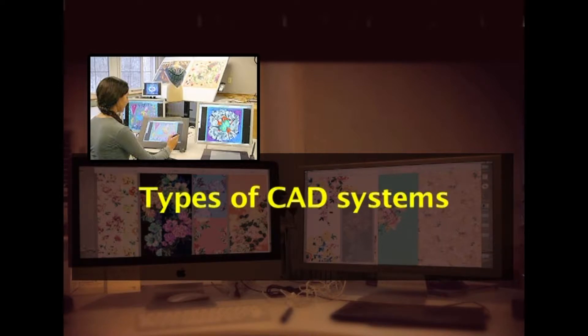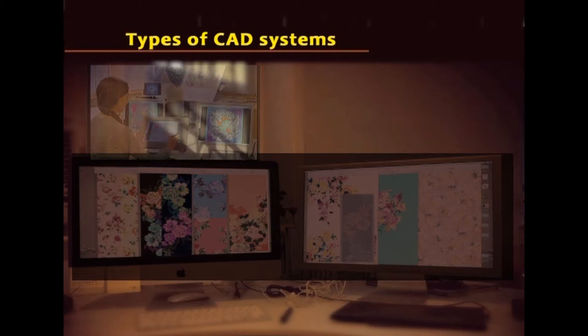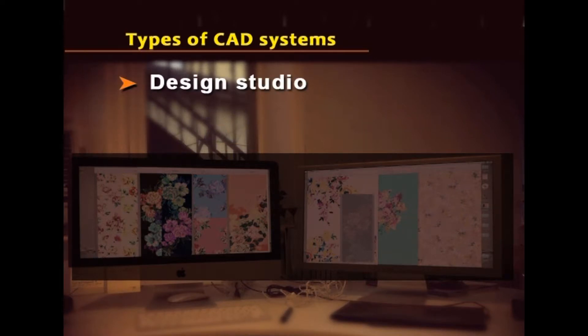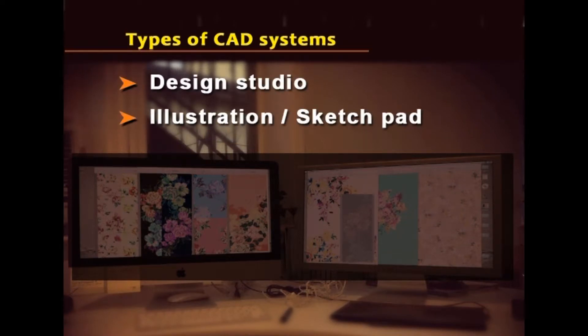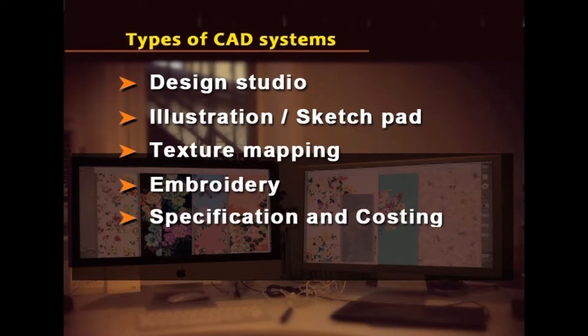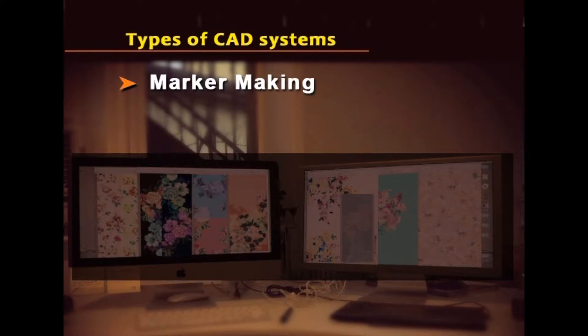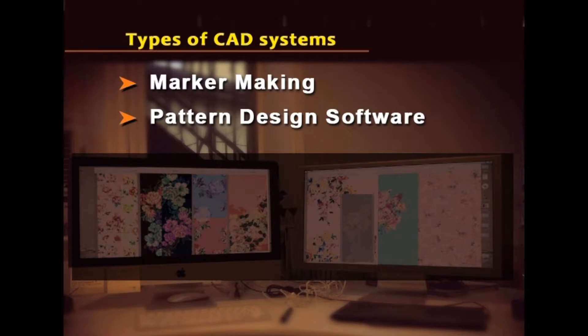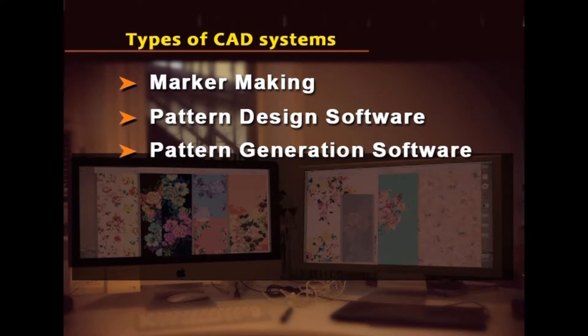We will see what are the types of CAD systems available in the market. One is the design studio, another is illustration or sketch pad, and there is texture mapping for embroidery, specification and costing, digitizing for grading and marker making, pattern design software, and pattern generation software. All these modules are available in the market and depending upon whether it is apparel design or textile design, we should be able to select the appropriate software.